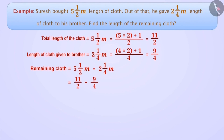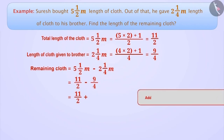Now we convert the operation of subtraction into addition. We write the first number as it is, then change the sign of subtraction to the sign of addition, and write the additive inverse of the second number as minus 9/4.